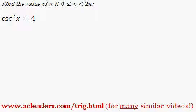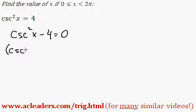I'm going to start by bringing the 4 over to this side and factoring the expression. This can be a difference of squares, so that's going to become cosecant of x minus 2 times cosecant of x plus 2 equals 0.